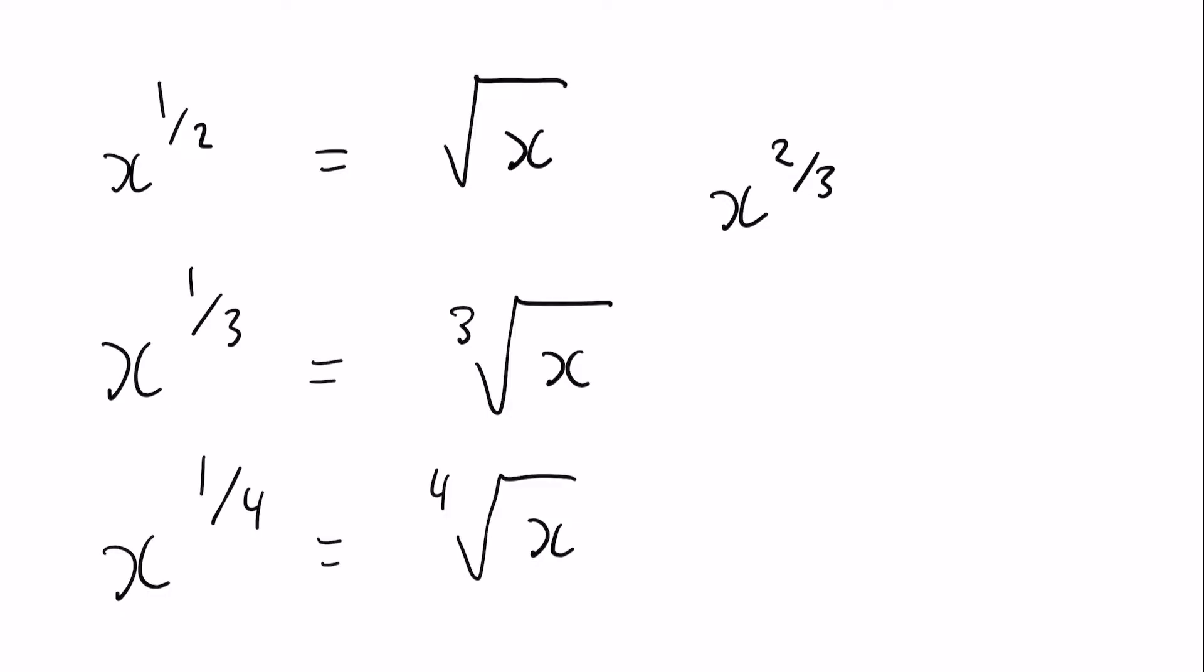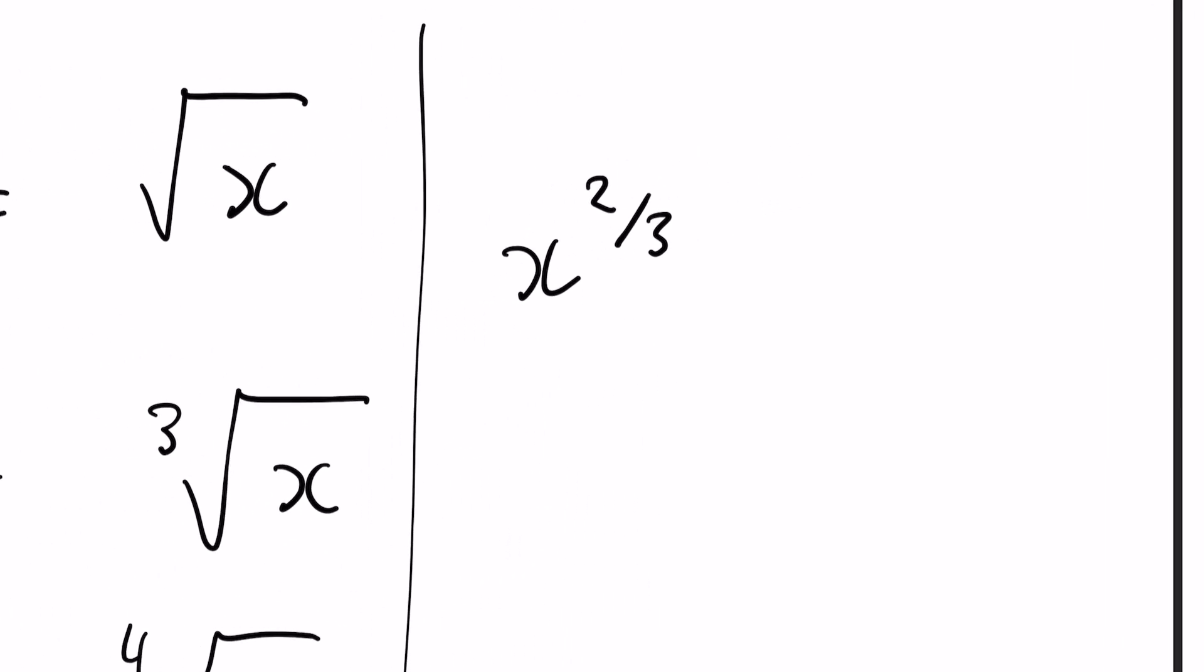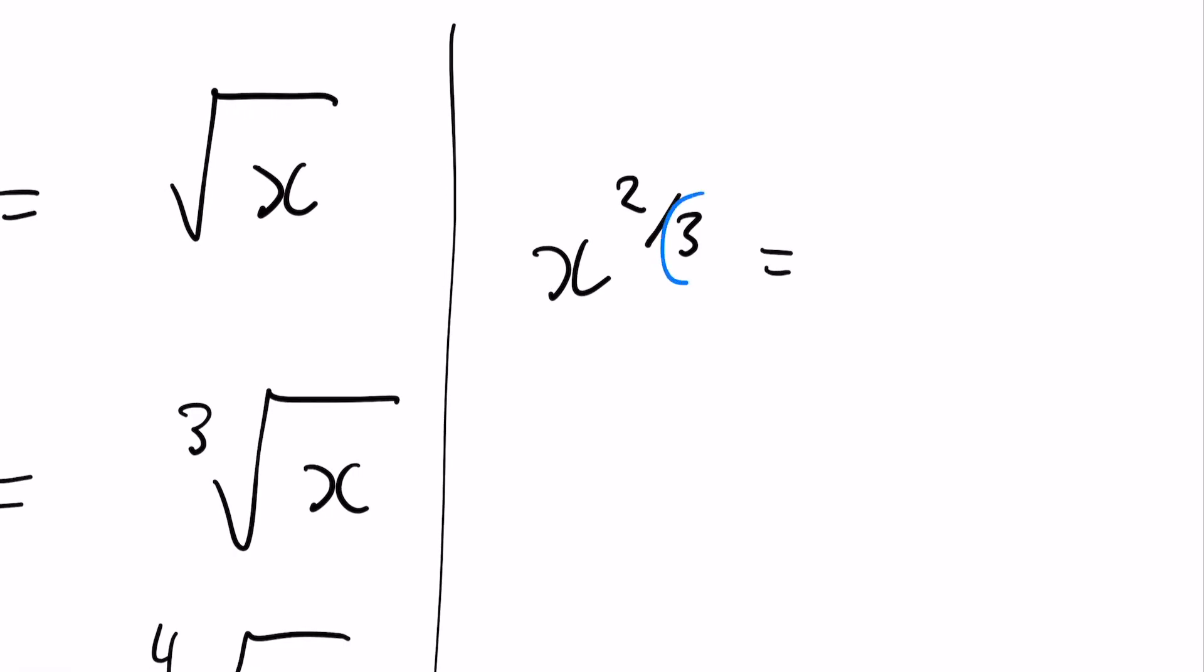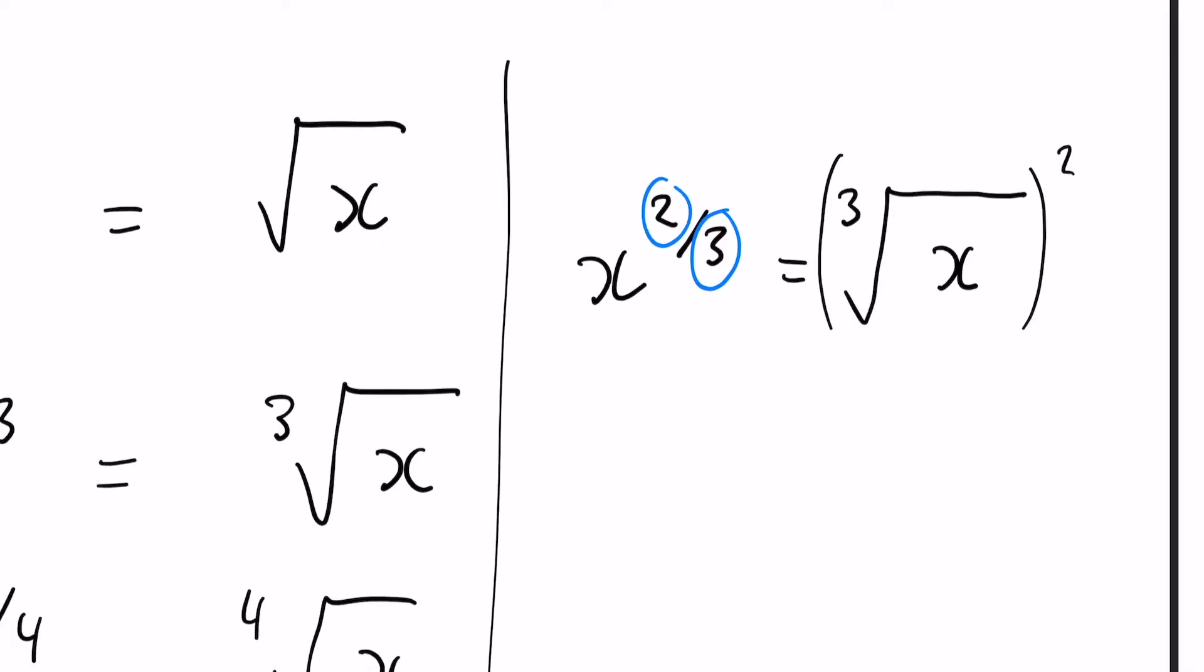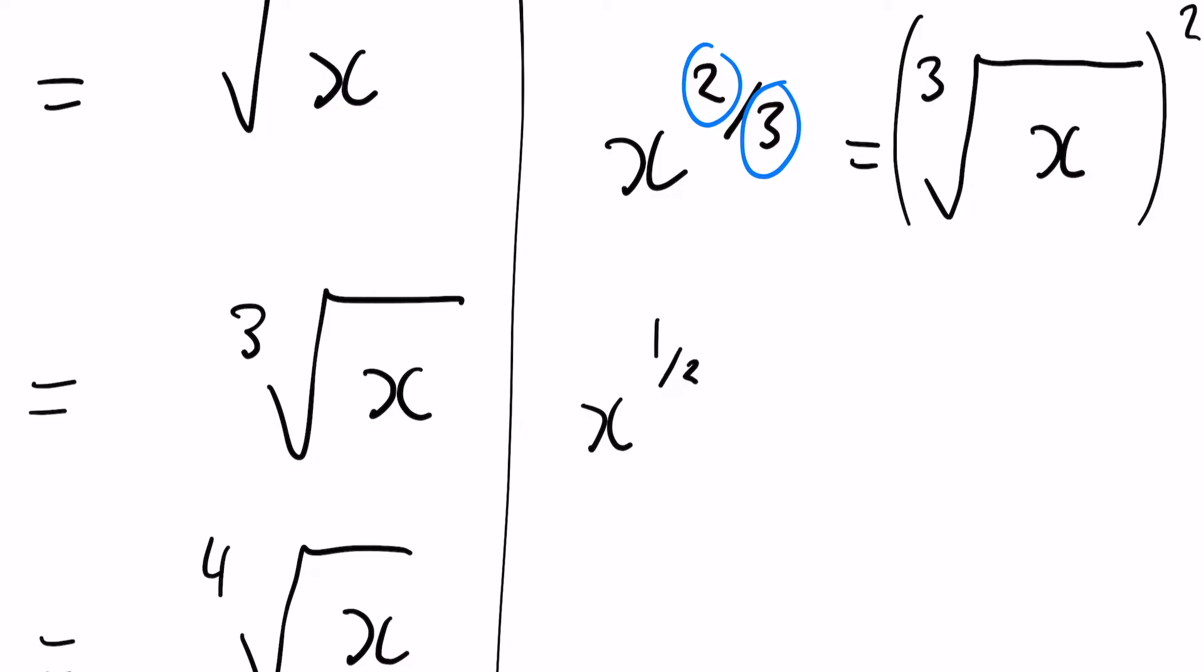Now one to consider which might be important is what if you've got something other than a one on top of the fraction, so x to the power of two thirds. Now the denominator always indicates what type of root you've got, so we can see here we have a cube root, so it's the cube root of x. But because this isn't a one, it's a two, then we actually have to square all of that. So imagine you could break it up into x to the power of a third squared, and by our multiplication rules we simply times them and two times a third is going to give us two thirds.